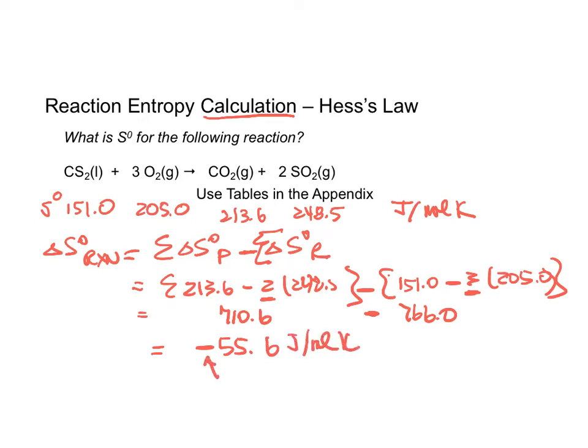Does that negative sign make sense? It says that our entropy is decreasing. So let's use what we learned in the last chapter. On the reactant side, we have 1 plus 3 for a total of 4 substances. On the product side, we have 1 plus 2 for a total of 3 substances.